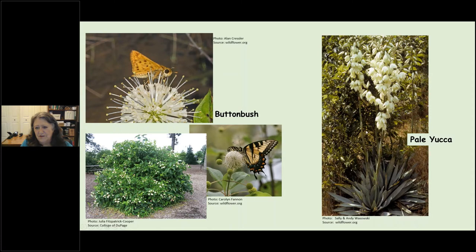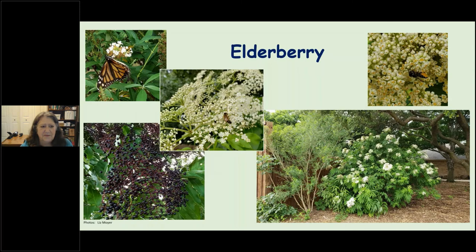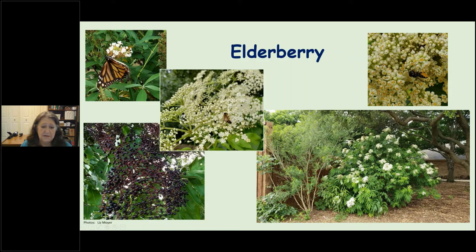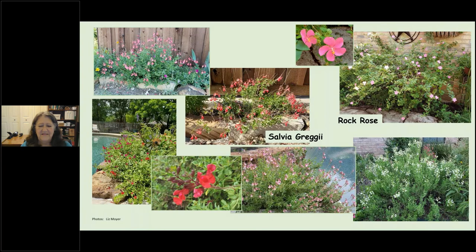The elderberry is one of my favorites. It flowers in spring just as monarchs are coming through and need to stock up before heading to Canada, so you'll have monarchs all over it, plus bees. Then look at those berries — that whole bush will be covered, which is really fun for the birds.